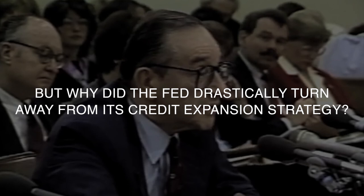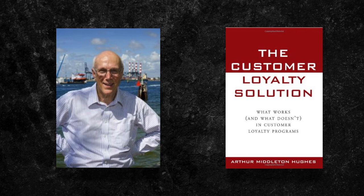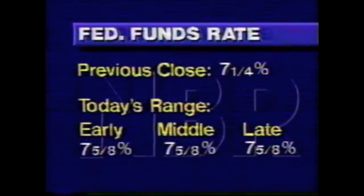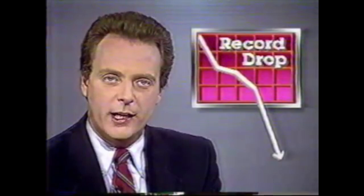But why did the Fed drastically turn away from its credit expansion strategy? According to economist Arthur Middleton Hughes, consumer prices shot up on higher medical expenses due to Medicare and Medicaid. The turning point was 1987, when the Fed put the brakes on money supply increases and maintained this policy for five years. The aftermath of the credit expansion was a steady, yet inevitable, recession.